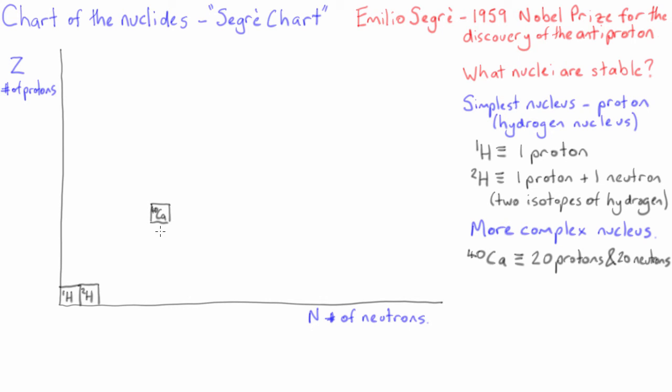Experimentally, it has been found that calcium 40 is the stable calcium isotope with the smallest number of nucleons. The heaviest stable calcium isotope is calcium 48, which has 20 protons and 28 neutrons. It appears on the Segre chart at Z equals 20 and N equals 28.